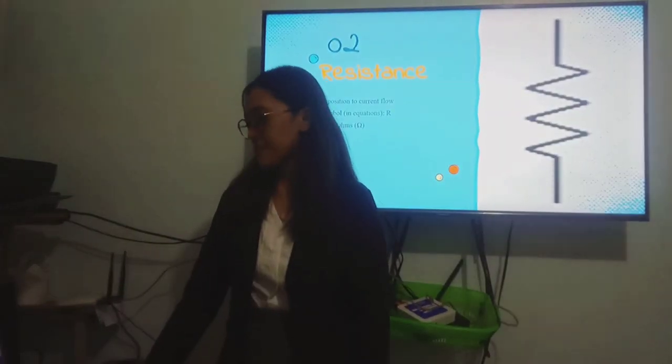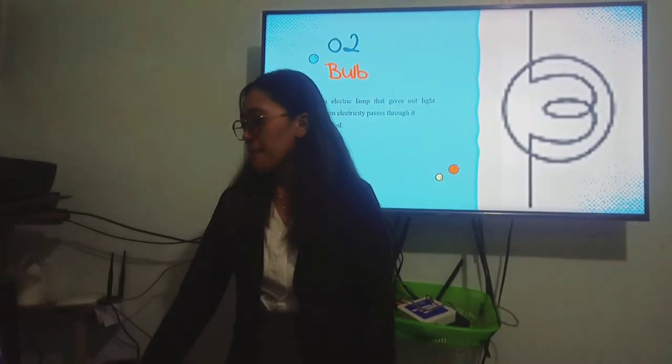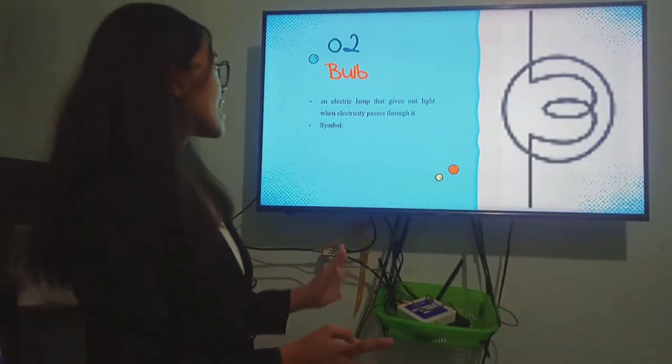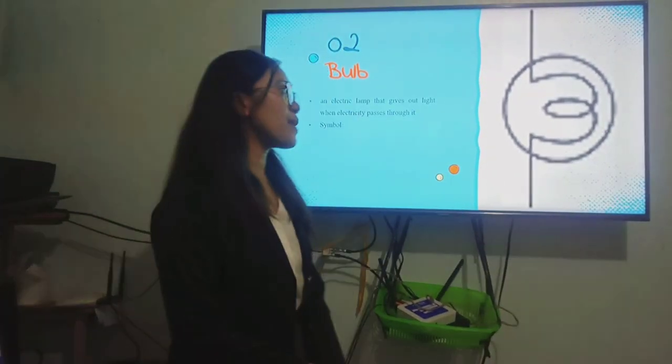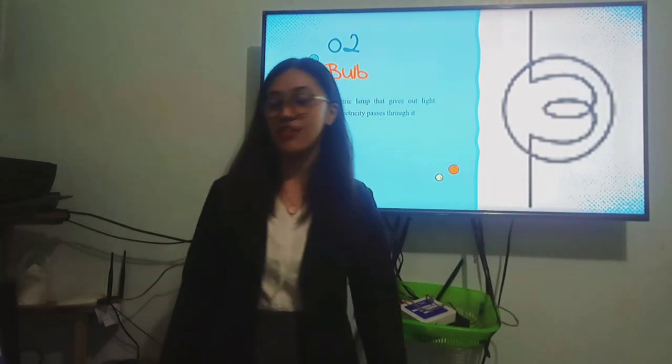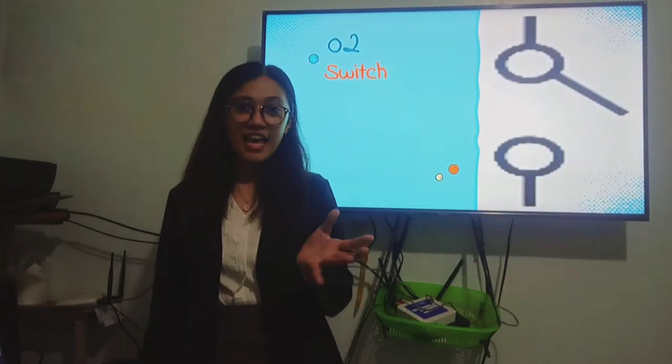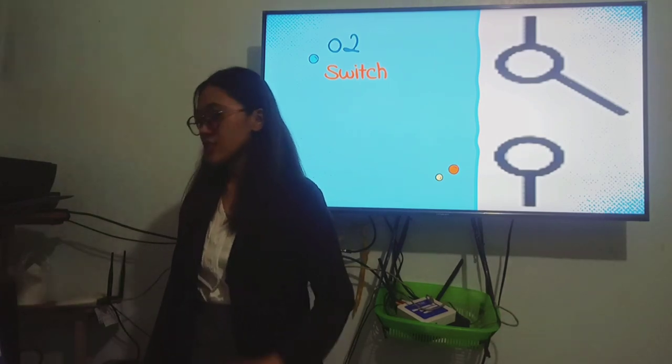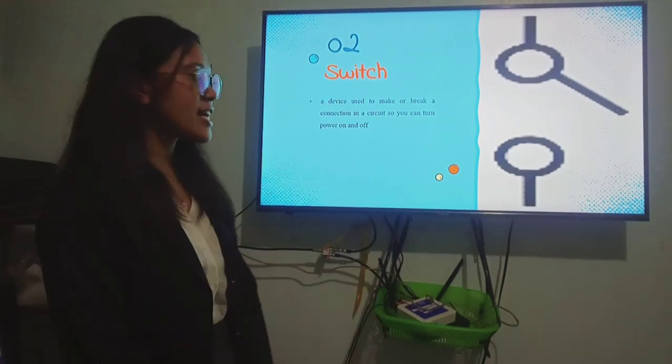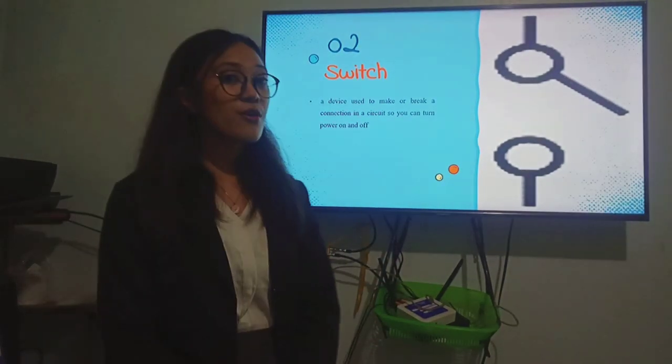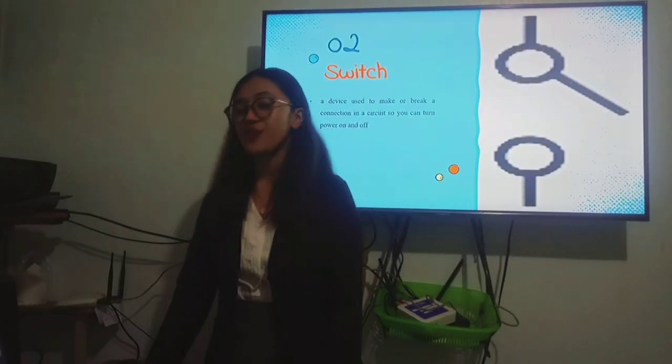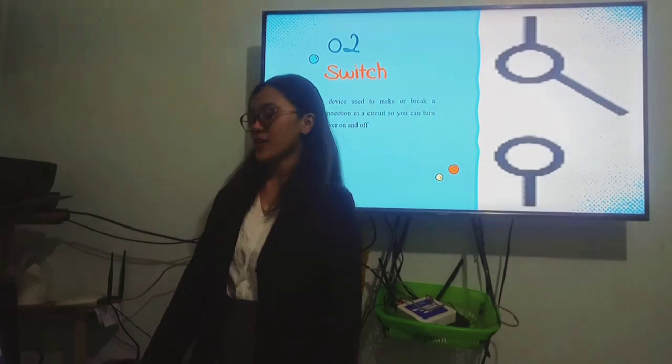Next, the next element is the bulb. Bulb is an electric lamp that gives out light when electricity passes through it. And the symbol of an electric bulb looks like this. There's a circle and also an X inside the circle. Now, the last element of an electrical circuit is the switch. This is a device used to make or break a connection in a circuit. You can turn the power on or off in a circuit. Do you have any questions about this?